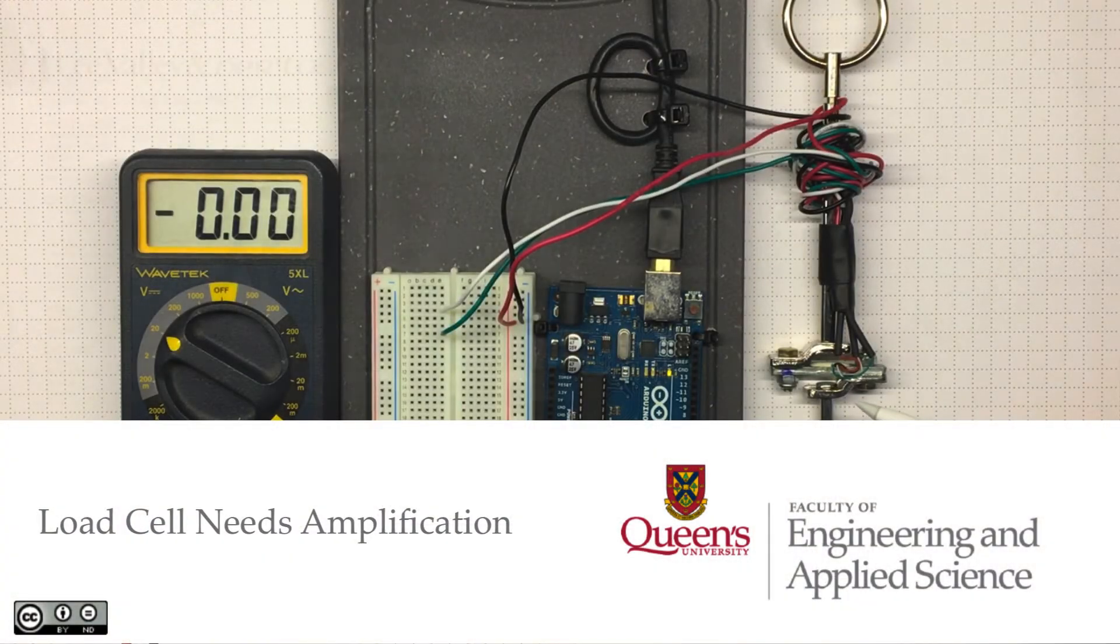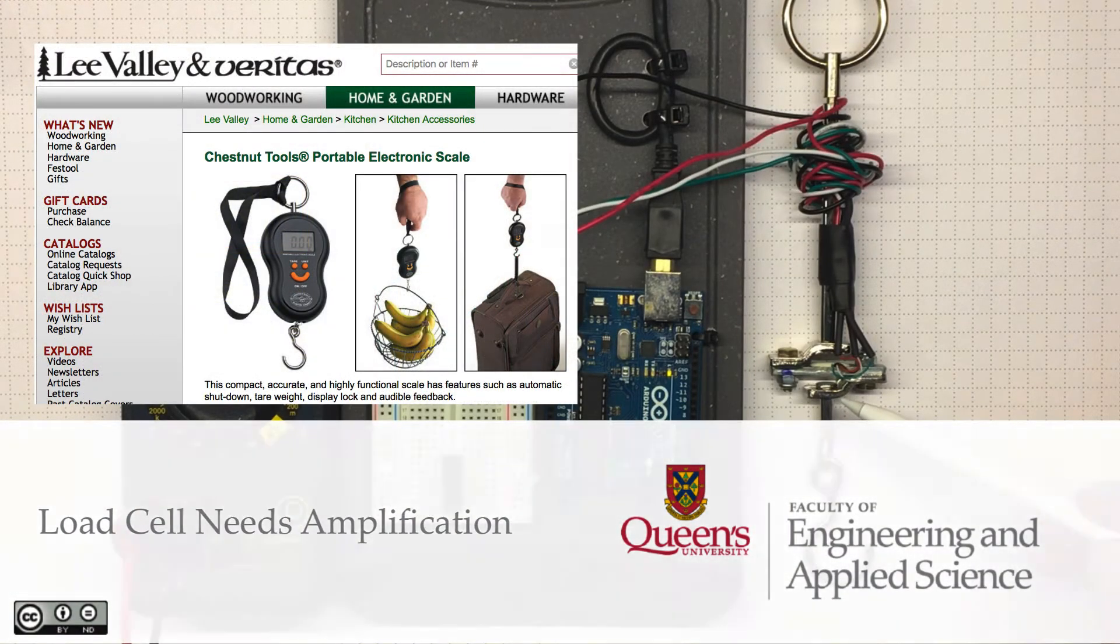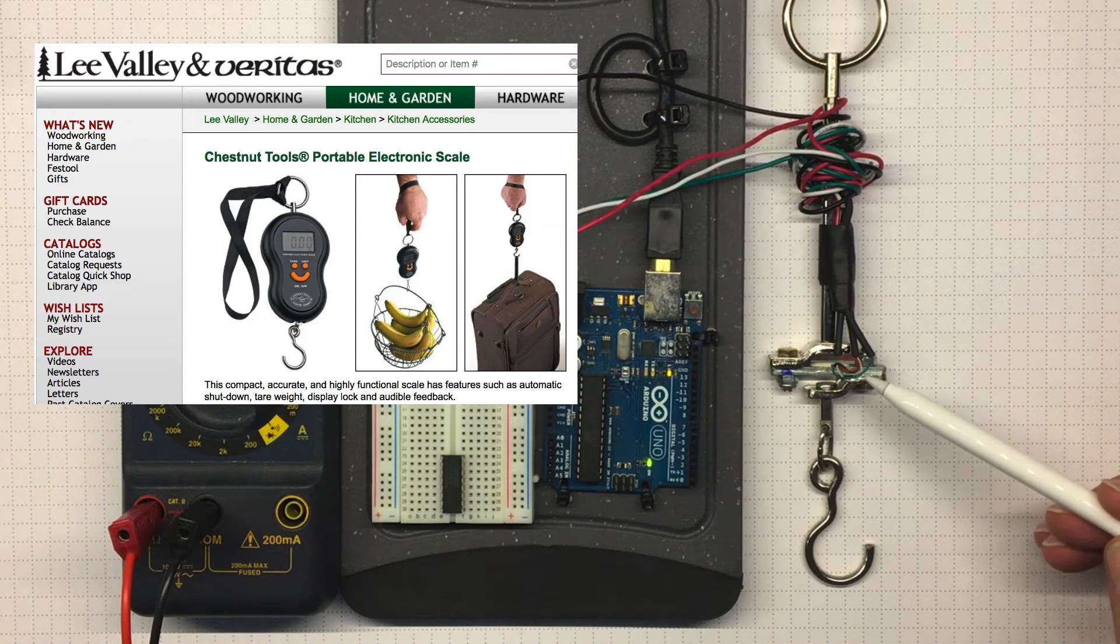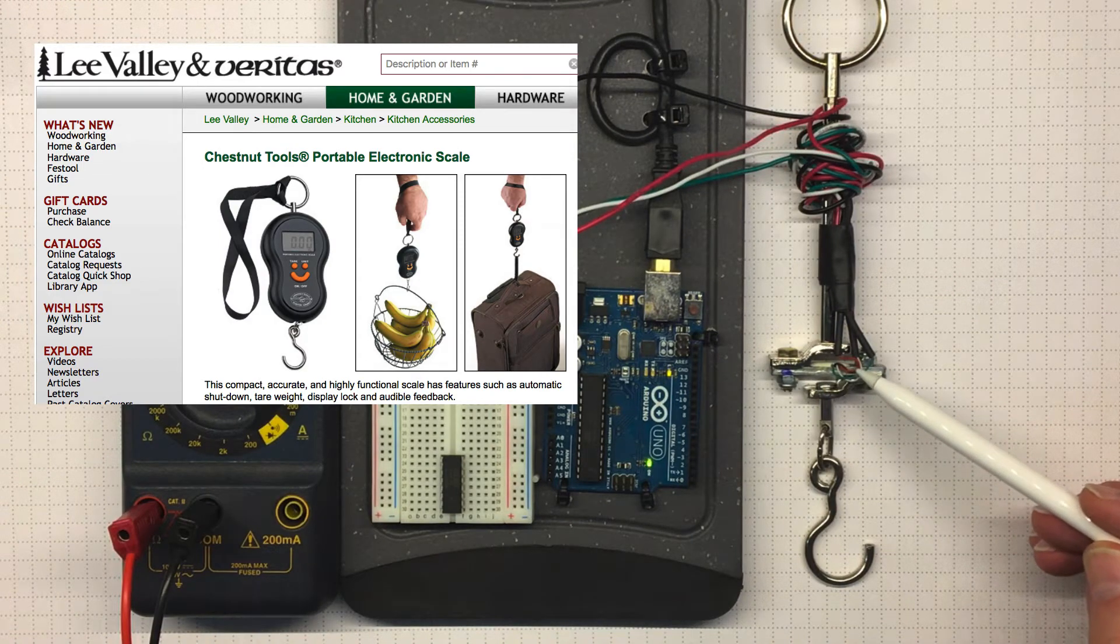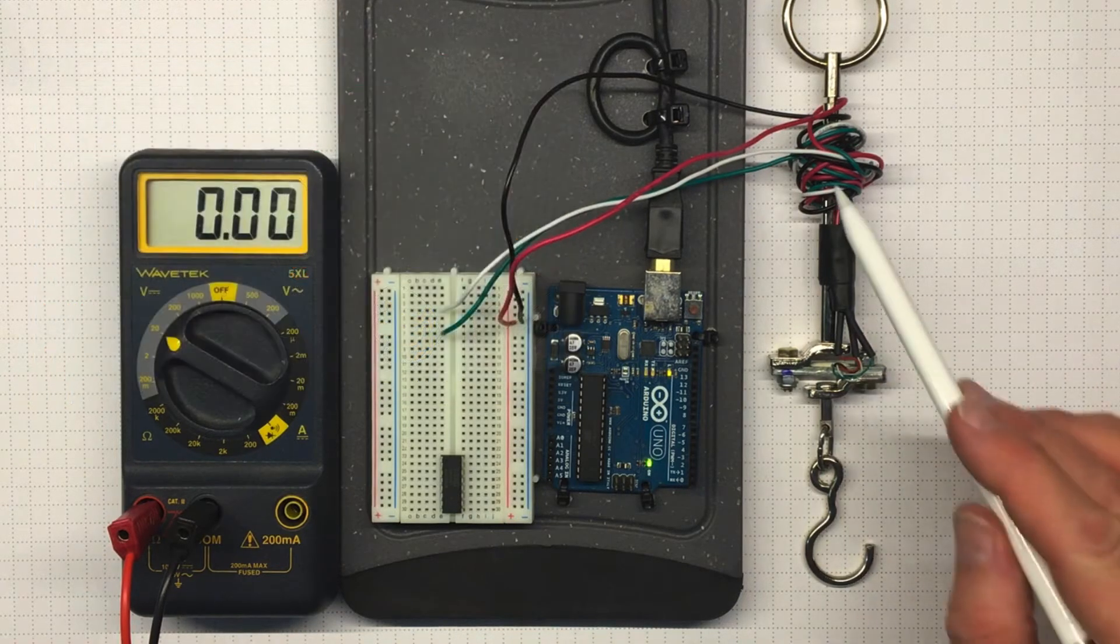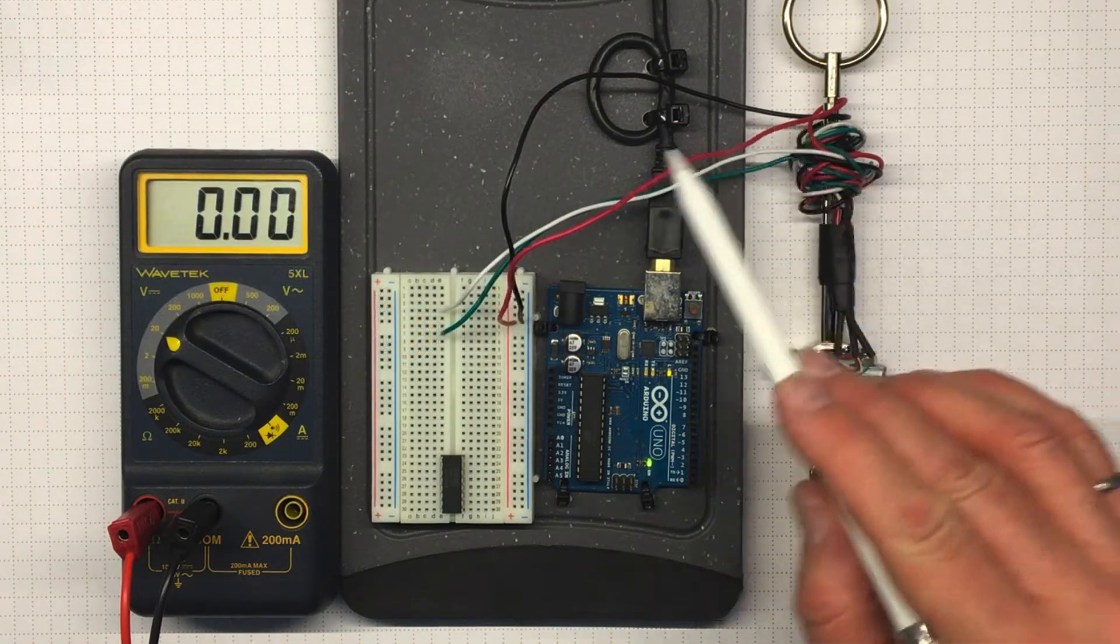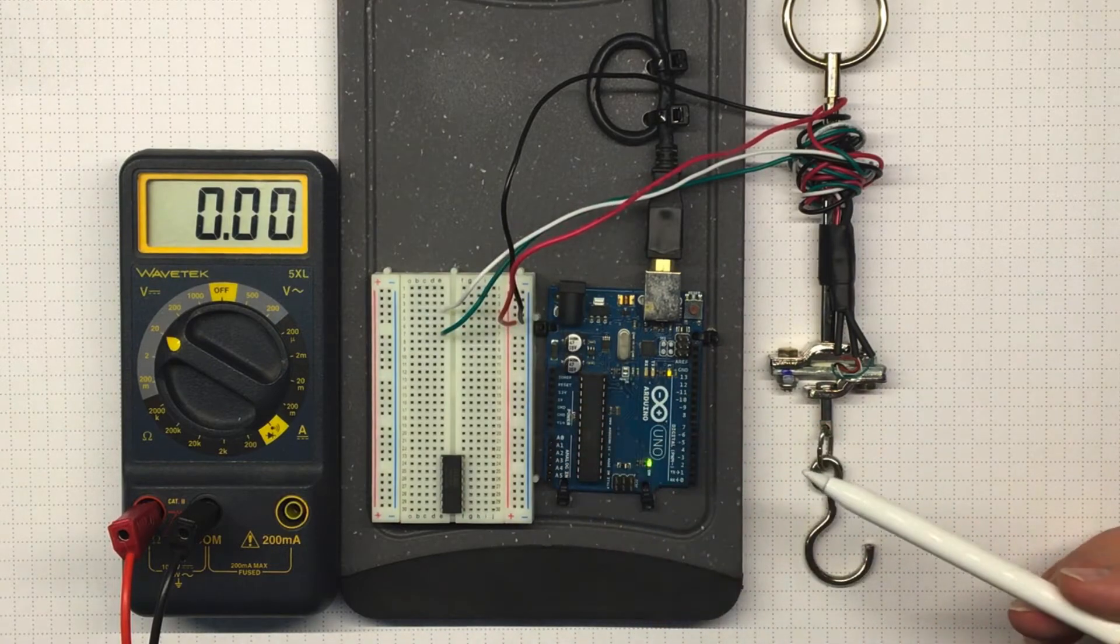This load cell assembly is what we'd find inside one of the little Lee Valley luggage scales. You'll notice there's four wires coming into the load cell down here: a red one, a black one, a green one, and a white one. And they come up through here and out to these larger wires that I can take over to the Arduino.